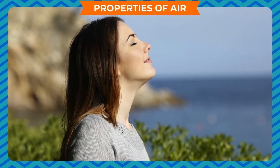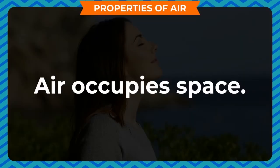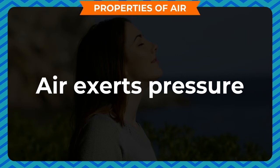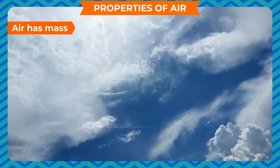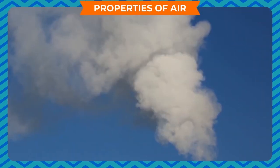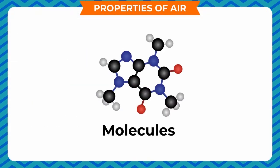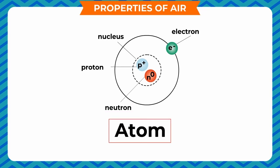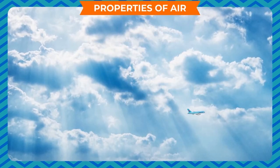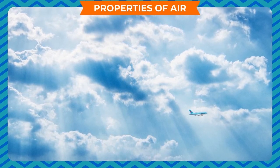Properties of air: air has some specific properties or characteristics. Air has mass; air occupies space; air exerts pressure; air can be compressed; air expands on heating. Air has mass because it is a mixture of many gases. Each gas has particular molecules, and gas molecules are made up of atoms — electrons, protons, and neutrons particles are present in each atom. The mass of these particles constitutes the mass of air.